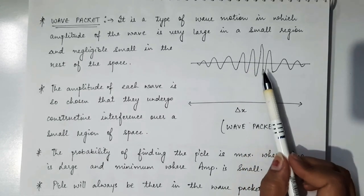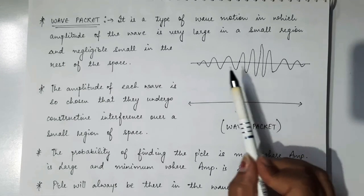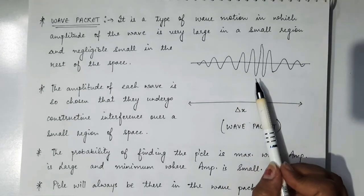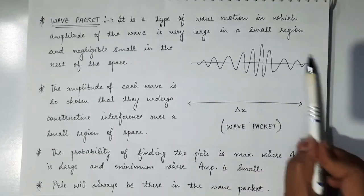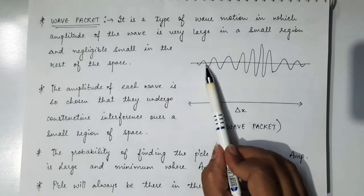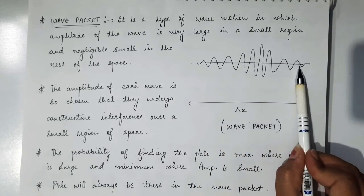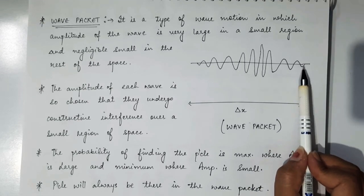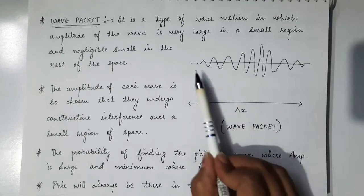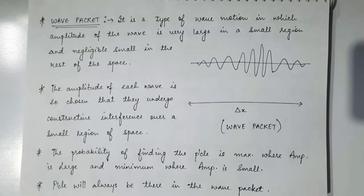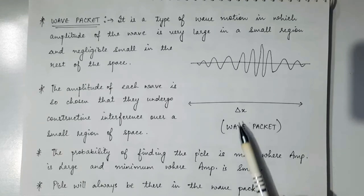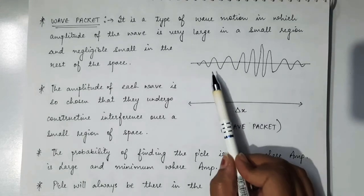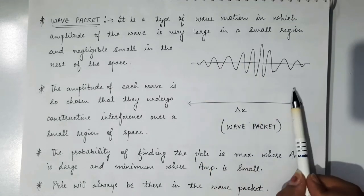The particle with which this wave packet is associated always lies inside this wave packet — it can be somewhere here in the wave packet. So there is a certain amount of uncertainty in the position of the particle. If delta x is the length of this wave packet, then the uncertainty in measuring the position of the particle is delta x, because it can be found anywhere inside this wave packet.